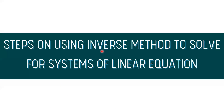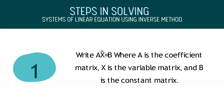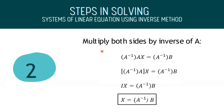Next are the steps on using the inverse method to solve systems of linear equations. First, remember the equation AX equals B, where A is the coefficient matrix, X is the variable matrix, and B is the constant matrix. Second, find the inverse of A and multiply it on both sides of the equation AX equals B.